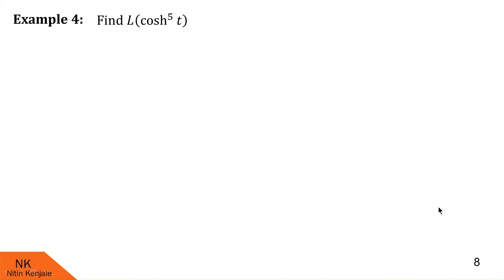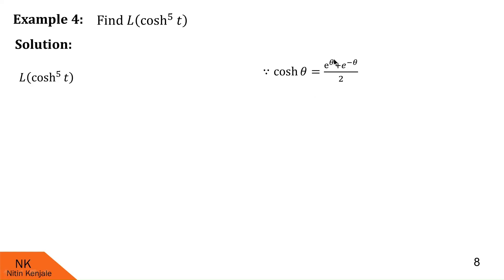Let us proceed for the next one. Here we are asked to find Laplace of cosh⁵(t). We do not have a direct formula for Laplace of cosh^n(t), so we write cosht = (e^t + e^(−t))/2. This function becomes [(e^t + e^(−t))/2]⁵. Since 1/2⁵ is a scalar, we take it out: (1/32) × Laplace of (e^t + e^(−t))⁵.